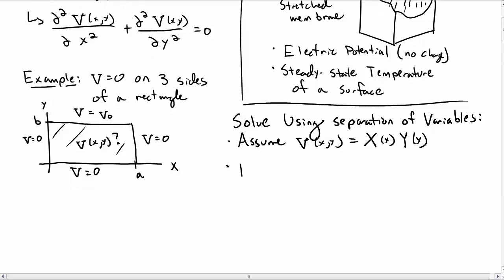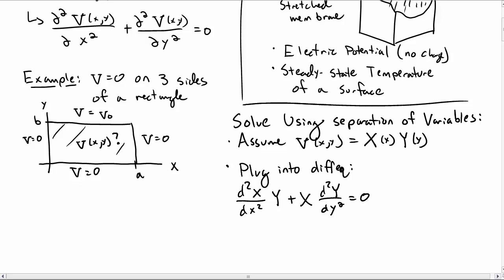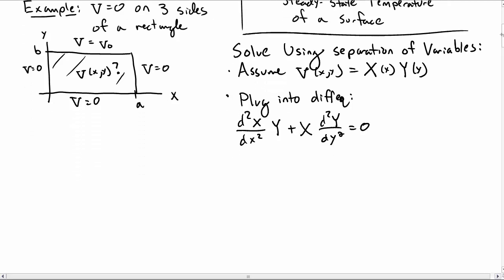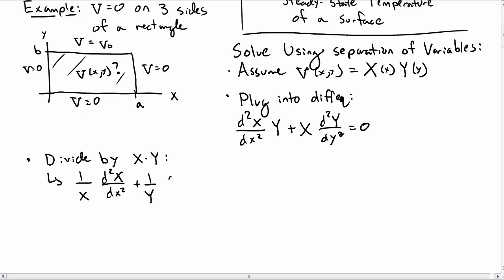Then we plug this into our differential equation and we get the second derivative of X with respect to x times Y plus X times the second derivative of Y with respect to y equals zero. Next we divide this entire equation by X times Y, giving us 1 over X times the second derivative of X with respect to x squared plus 1 over Y times the second derivative of Y with respect to y squared equals zero.